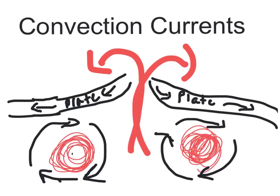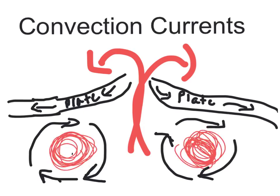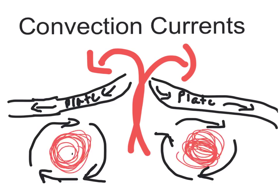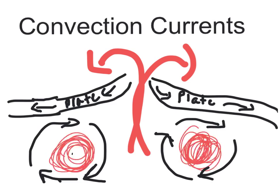Convection Current. The process of hot air rising and cooling, air sinking, are convection currents. These currents create energy that causes the plates to move.